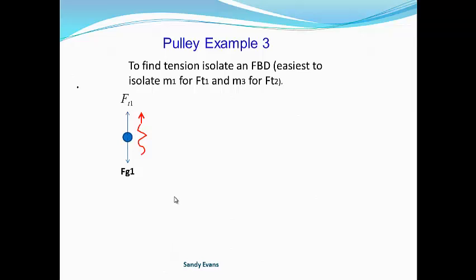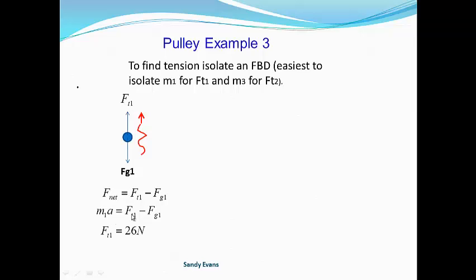Here's our free body diagram for mass 1. Notice our acceleration — we still have to follow that clockwise direction. So our net force will be positive tension 1 minus the force of gravity of mass 1. And since it's an isolated free body, the net force is just M1 times A. Then we plug in our numbers and we have our tension in that first piece of string.